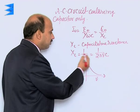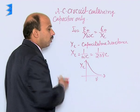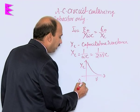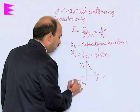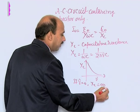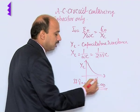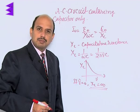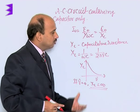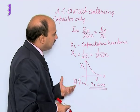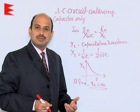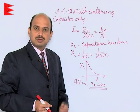If we take ν = 0, that is for direct current, then Xc becomes infinite. This means the capacitor blocks a steady or direct current. This is the capacitive reactance — the resistance offered by a capacitor in an AC circuit.